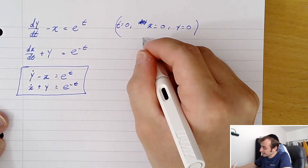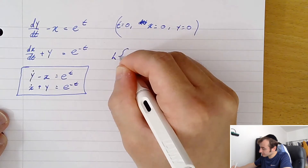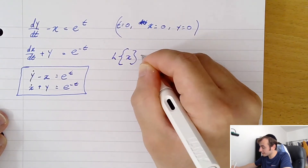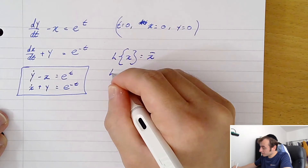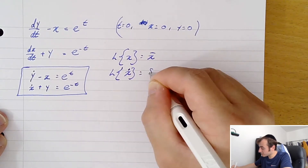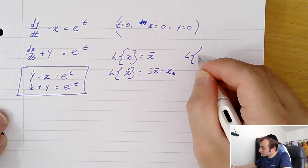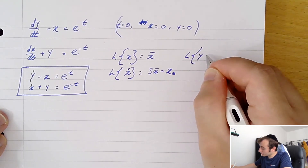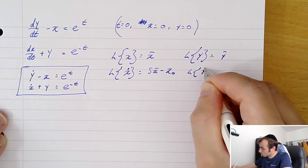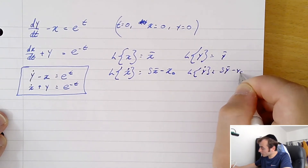Let's start with our Laplace notation. The Laplace transform of x is x-bar, and the Laplace transform of the first derivative of x is s·x-bar minus x-naught. The Laplace transform of y is y-bar, and the Laplace transform of y-dot is s·y-bar minus y-naught.